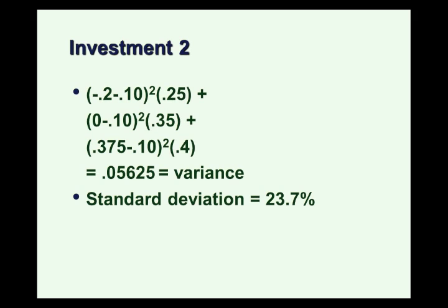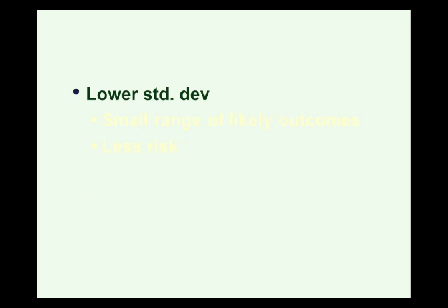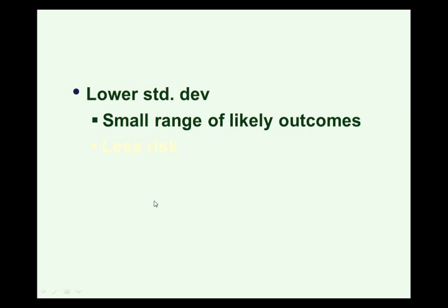So we have an expected return — the center — of 10% for each investment, but now we get more of a range. We can go plus or minus the standard deviation to give us a likely range of where returns are going to fall. The lower the standard deviation, the smaller the range of likely outcomes, and we associate that with less risk. A lower standard deviation means most outcomes are likely to be very close to the expected return, which reduces uncertainty over return and we consider that less risky.